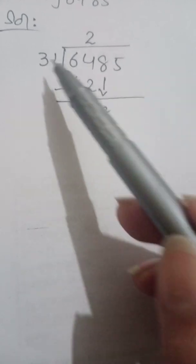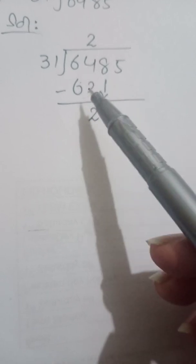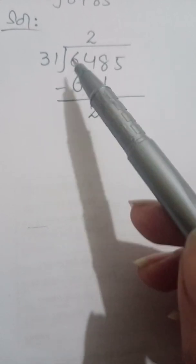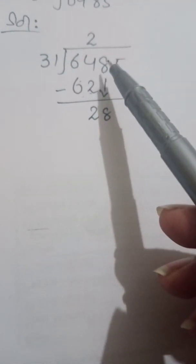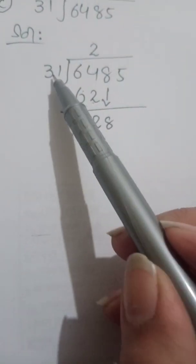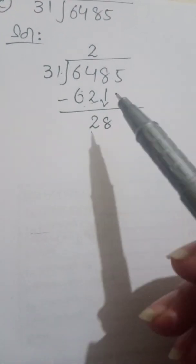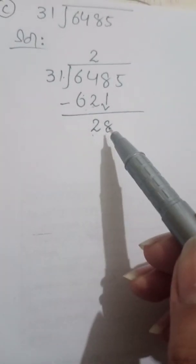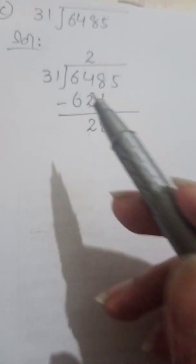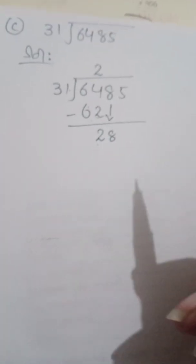I multiplied 31 by 2 and got 62. I write 2 in the quotient and 62 below as the product. Next step: subtract — 4 minus 2 is 2, 6 minus 6 is 0. Then bring down the next digit, which is 8. Now we have 28. But 28 is less than 31.